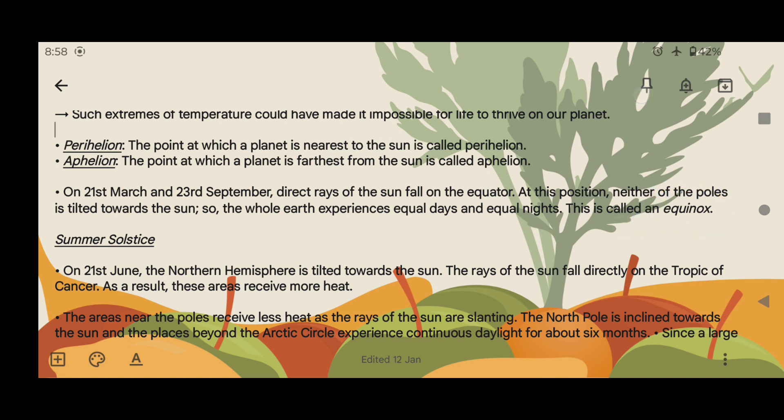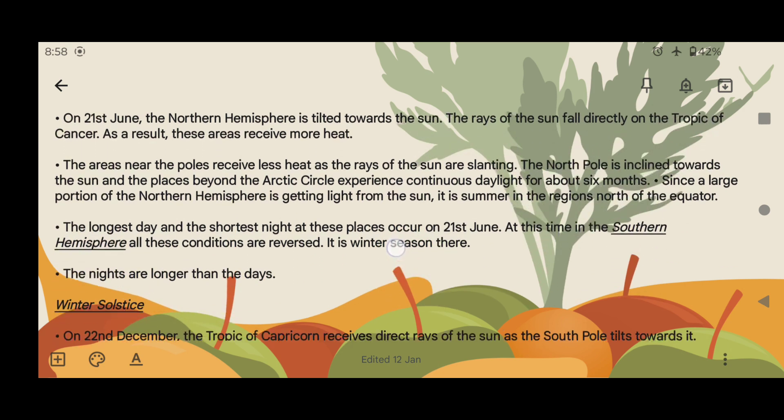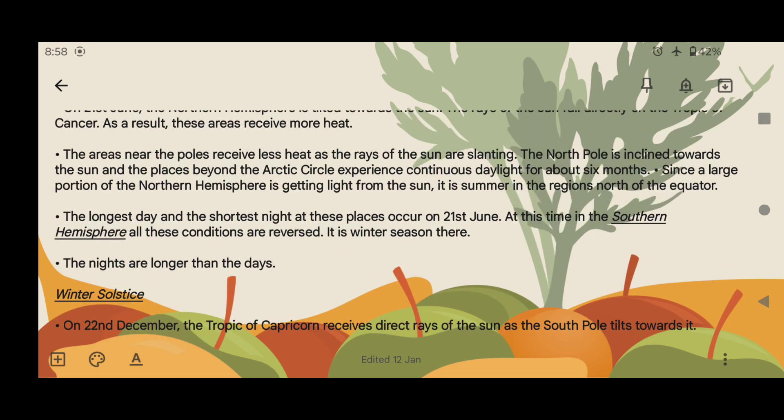Summer solstice: On 21st June, the northern hemisphere is tilted toward the sun. The rays of the sun fall directly on the Tropic of Cancer. As a result, these areas receive more heat. The areas near the pole receive less heat as the rays of the sun are slanting. The north pole is inclined toward the sun and the places beyond the Arctic Circle experience continuous daylight for about six months.